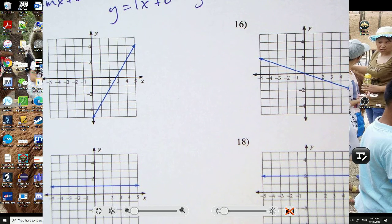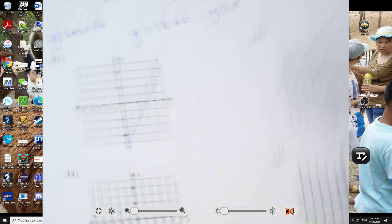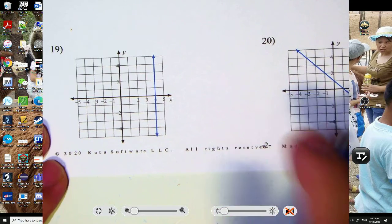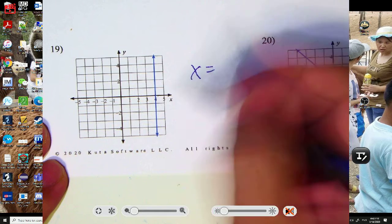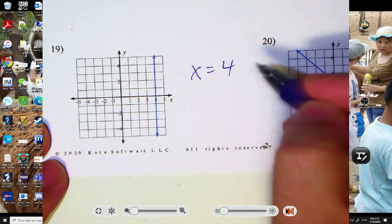So 19 is a vertical line. Vertical lines always, it's x equals, and it goes to the x value. So it's just x equals 4.